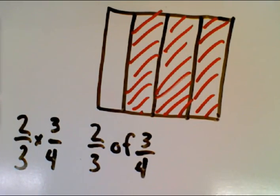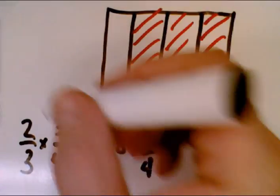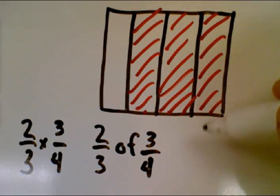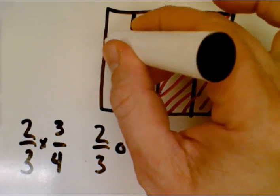Now we want two-thirds of that. So when we go in the opposite direction to make our thirds, we've broken this up into fourths vertically with vertical lines. With horizontal lines, we'll break it up into thirds.